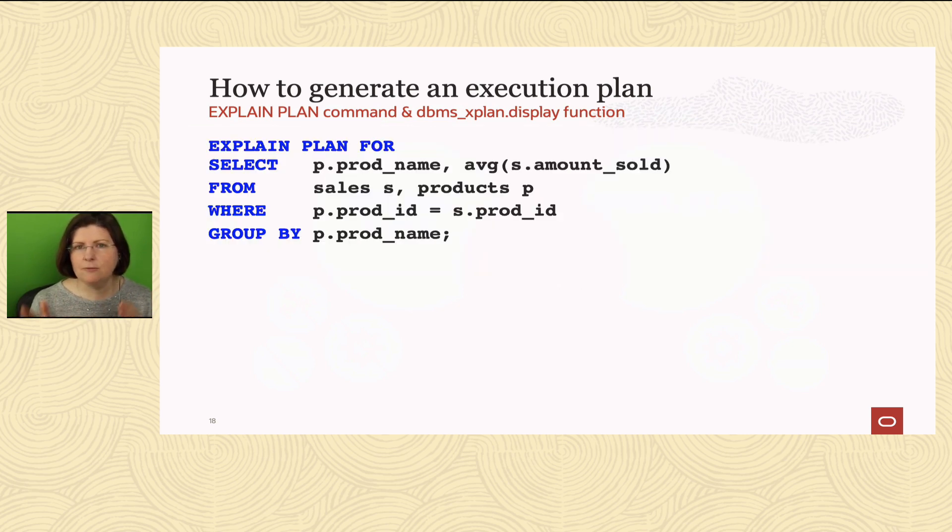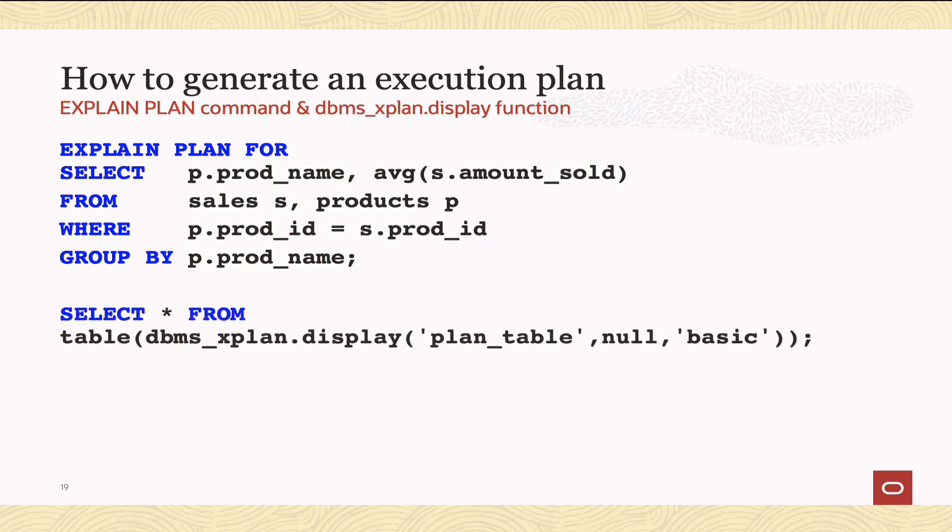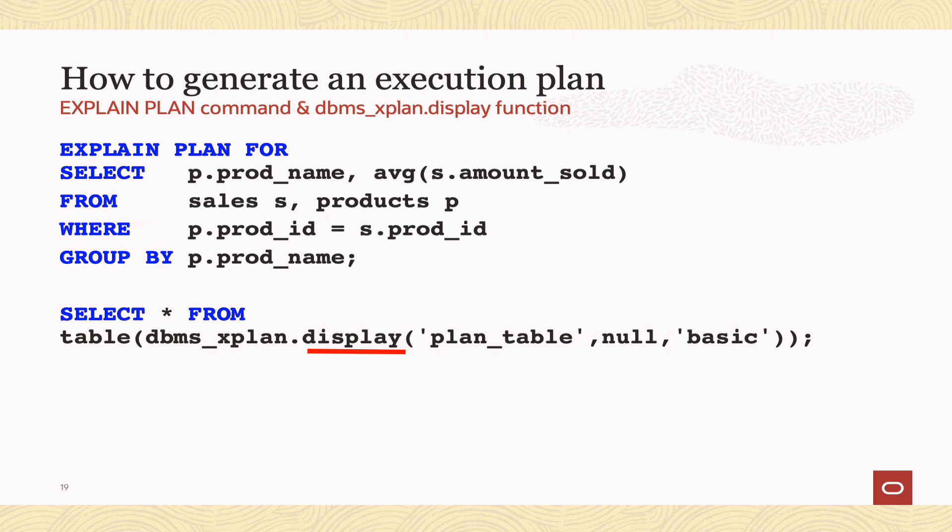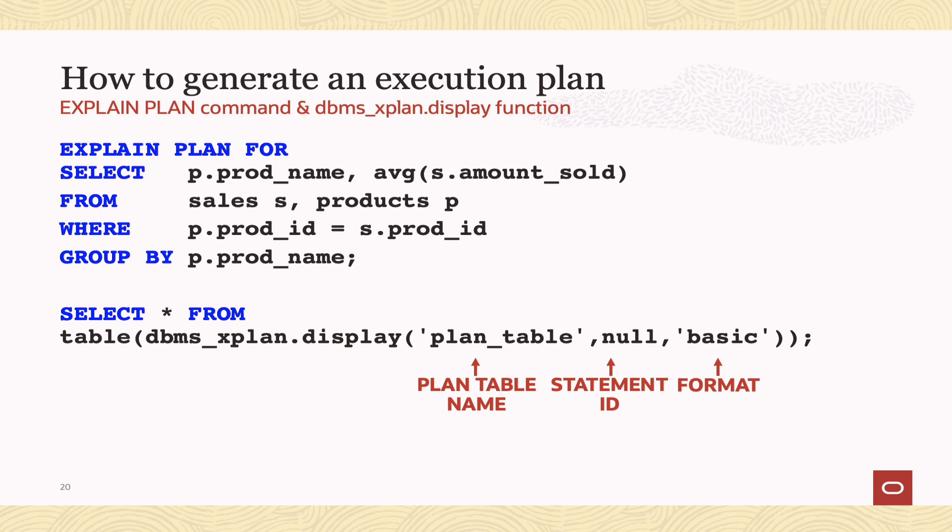I'd say explain plan for, give the SQL statement, and then once that says it's been explained, then I want to retrieve the plan, and I do that by taking advantage of a built-in package inside the Oracle database called dbms_xplan. And there's a function in there called display, and it's going to take three arguments. The first argument is the plan table name. You should just let that default. Plan table is the default name, but I don't even bother supplying it. If you leave it blank, it will find your user's default plan table.